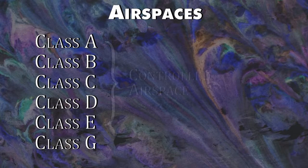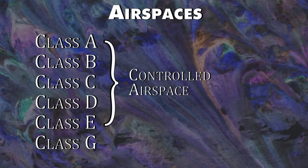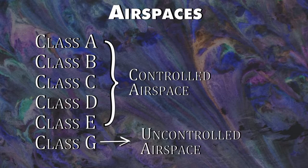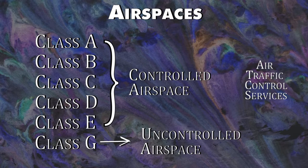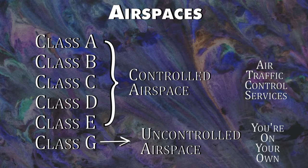All the airspace classes are controlled except for Class G airspace — that one is uncontrolled. The difference between the two is that air traffic control can give you instructions in controlled airspace, while in Class G airspace they don't provide any of those services and basically you are on your own.